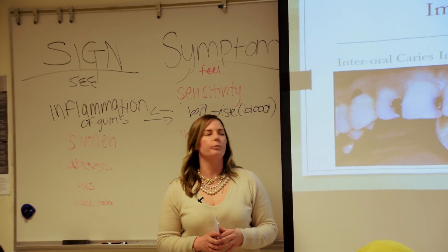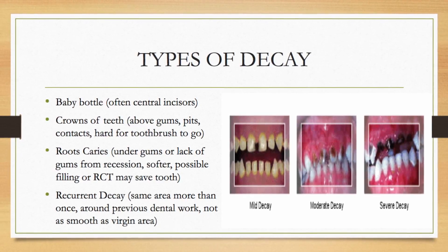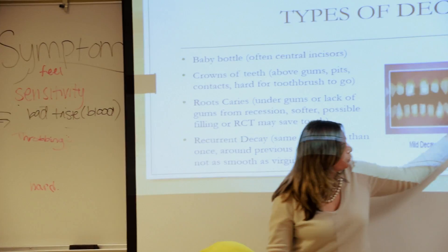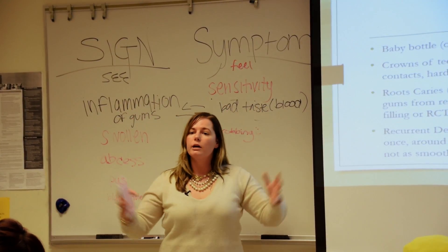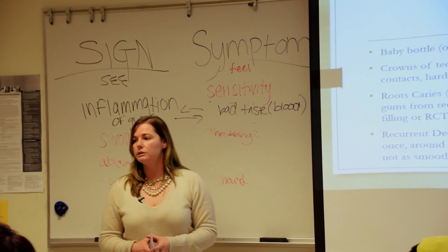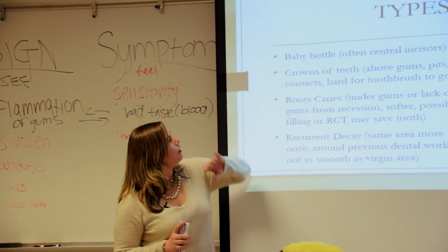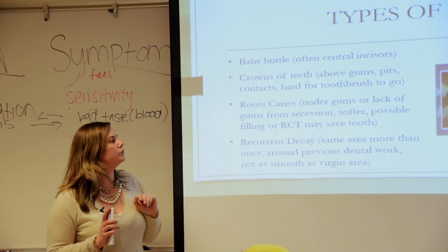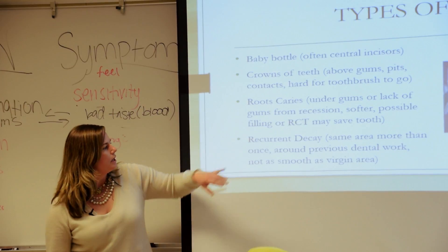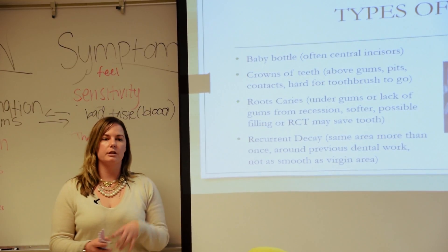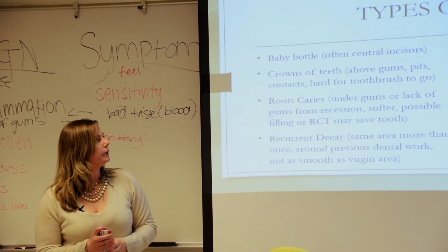Different types of decay affect different people. Babies get baby bottle teeth — starts mild with front teeth, turns moderate, then severe where teeth are almost gone. Baby teeth are important because they guide adult teeth to where they need to go. Root caries affects mostly geriatric people with recession — these teeth can be lost quickly. There's also recurrent decay under previous work: under crowns and fillings, decay can blow up quickly and sometimes only be seen on x-ray.